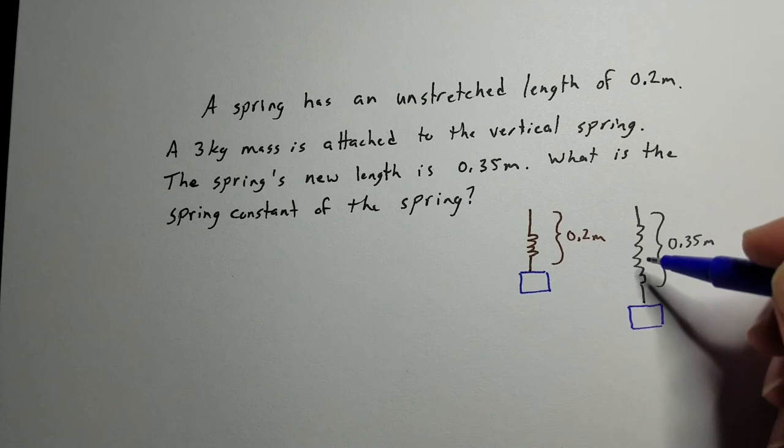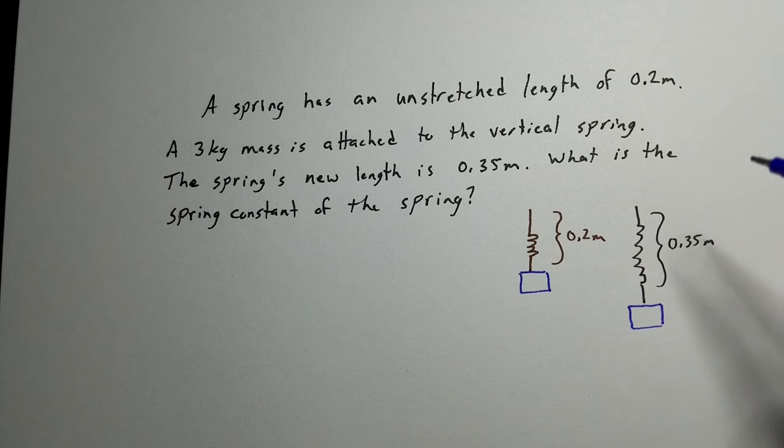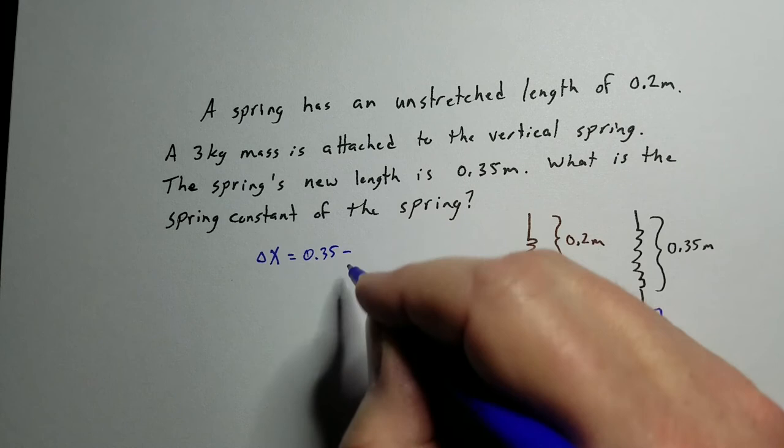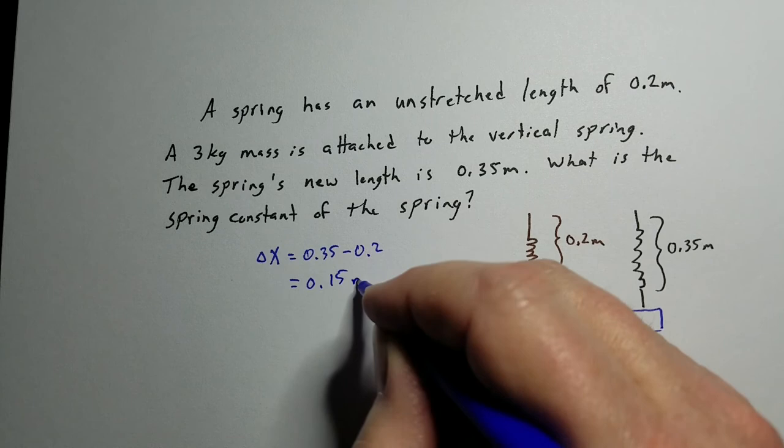Well, we first need to do, since we've got an unstretched and a stretched length, we need to figure out how much it actually stretched. And so it actually stretched, let's see, let's call it delta x, the difference in those two. So 0.35 minus 0.2, so it actually stretched 0.15 meters.